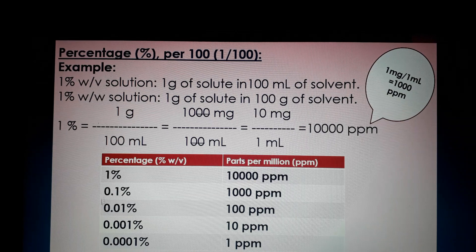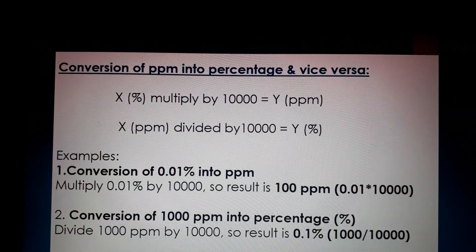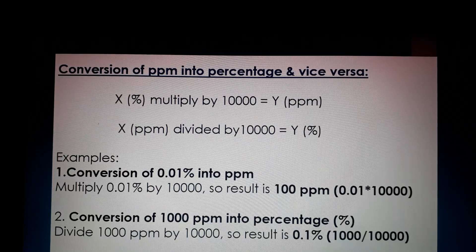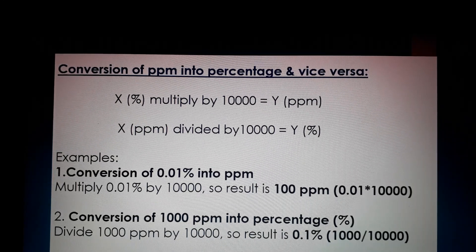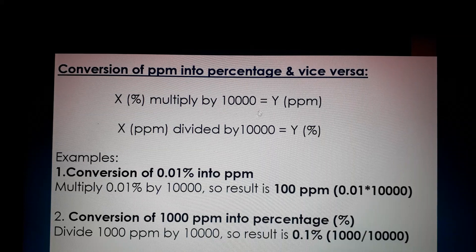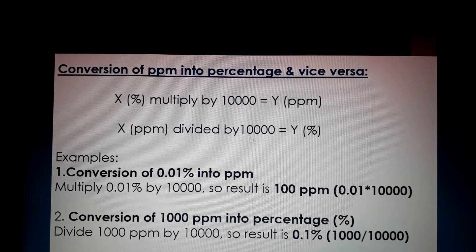We can do a number of calculations using these values. For conversions during laboratory work or when preparing solutions, knowing how to convert PPM to percentage and percentage to PPM is very important. If you have X percent of a solution, multiply that value by 10,000 to get the value in PPM. If you have a value in PPM, divide by 10,000 to get the value in percentage.